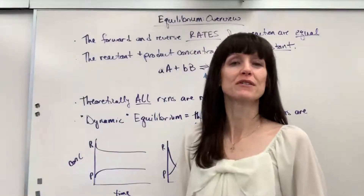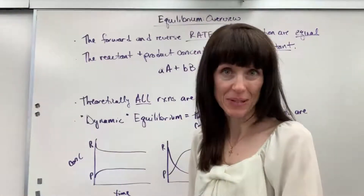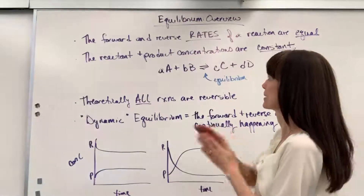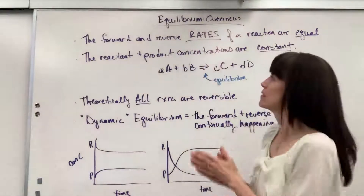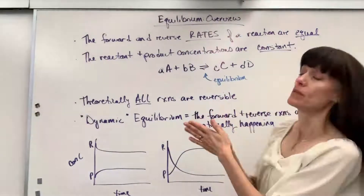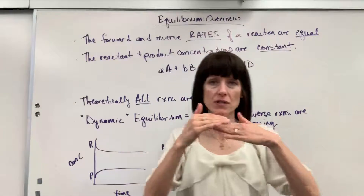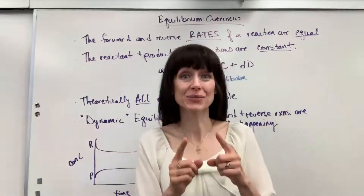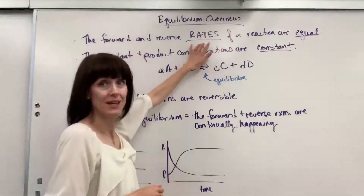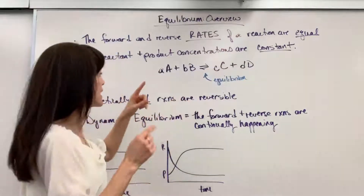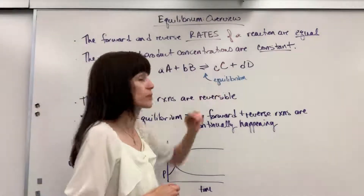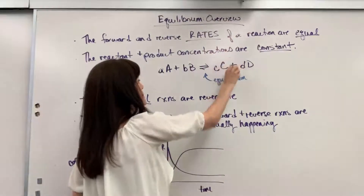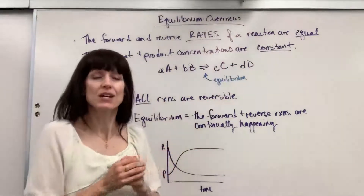Hi, this is an overview of equilibrium. Two important things you need to know about equilibrium. Here's the official definition: equilibrium is when the forward and the reverse rates of a reaction are equal. Notice what's capitalized — rates. It's the rate at which reactants change to products is the same rate at which products change back to reactants.